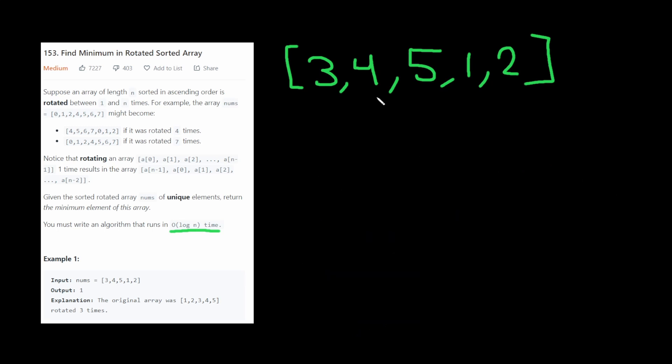But our input we know is rotated some number of times. So we can't just do binary search directly like this. So we can't just check that this four is less than five, because, well, one is also less than five. So it doesn't really help us. So how do we approach this?